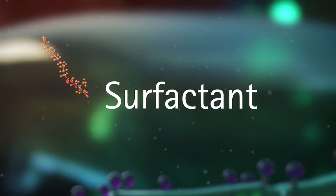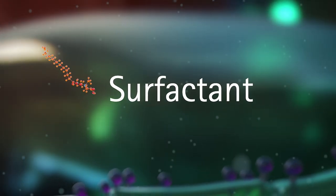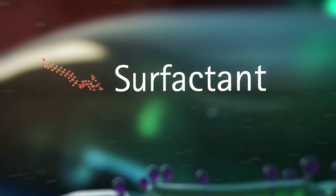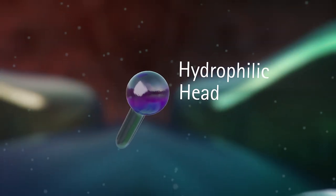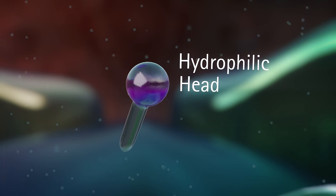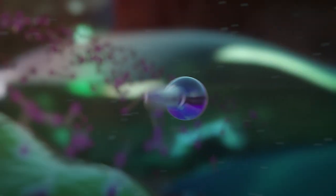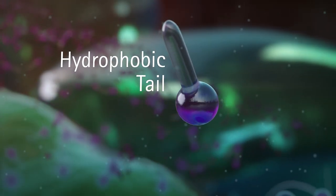Betaine is a surfactant. Let's have a look at how a surfactant works. A surfactant molecule basically consists of a hydrophilic, water-attracting head and a water-repelling, hydrophobic tail.